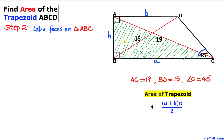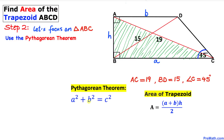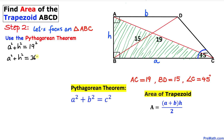Let's focus on triangle ABC. This triangle is a right triangle, so we apply the Pythagorean theorem: a² + b² = c². Here the hypotenuse is the diagonal AC = 19, so we get a² + H² = 19² = 361. We'll call this Equation 1.